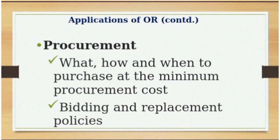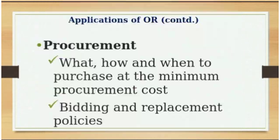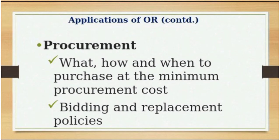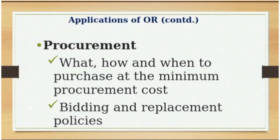Another application is procurement — purchases you bring into the organization. You need to decide on the timing: what to purchase, how to make the purchases, and when to purchase, all at the minimum procurement cost. For example, a beverage company producing pineapple juice faces the challenge that pineapple is seasonal. You may get perishable goods at a point in time and must manage how to stock and preserve them so that your production is not disrupted when the material is unavailable.